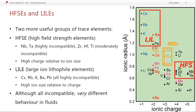Two quite important groups of trace elements we'll talk about are the high field strength elements and the large ion lithophile elements. On the right here is a plot of ionic radius against ionic charge. Out over here we have silicon — 4 plus charge, very small ion. We already talked about potassium; it's only 1 plus charge and it's a very large ion. In the middle here we have the rare earth elements. Some people group these differently, so you'll see different definitions for what constitutes a high field strength element.